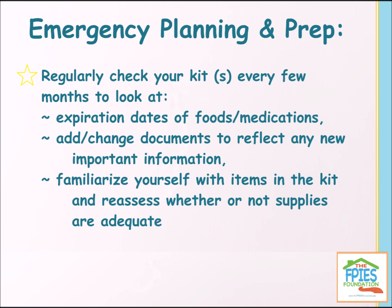Finally, you want to make sure that you regularly check your kit every few months. The things you're going to be looking at are expiration dates of foods or medications. You want to add or change any documents to reflect new important information, and reassess whether or not certain supplies are adequate. Have your needs changed in the last few months? Maybe your child has some new safe foods now, and there are additional things you can put in your kit. Or perhaps when you first created your kit your child was six months old and now they're two, and their needs are a little bit different.